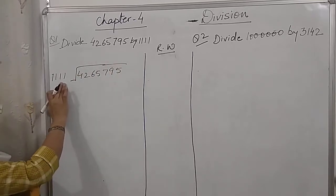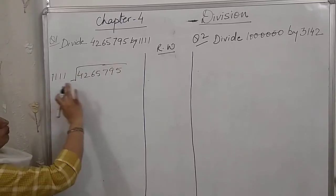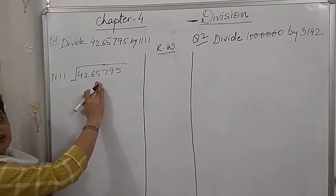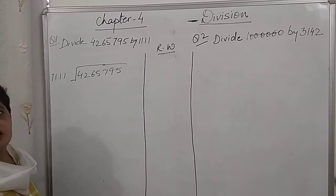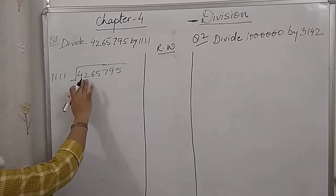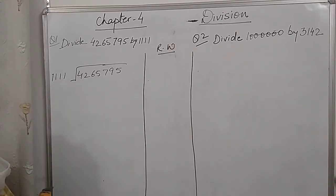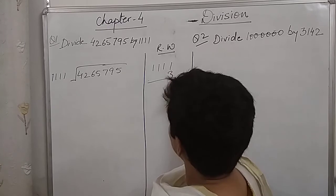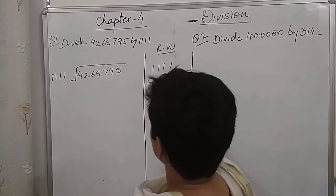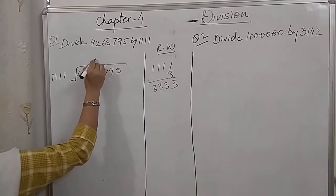Now divisor is of 4 digits. So let's see if the first 4 digits are divisible by this divisor. Yes, the first 4 digits are bigger than this divisor. So we can take the partial dividend as first 4 digits. So 1111 multiply by 3 gives 3333. So 3.